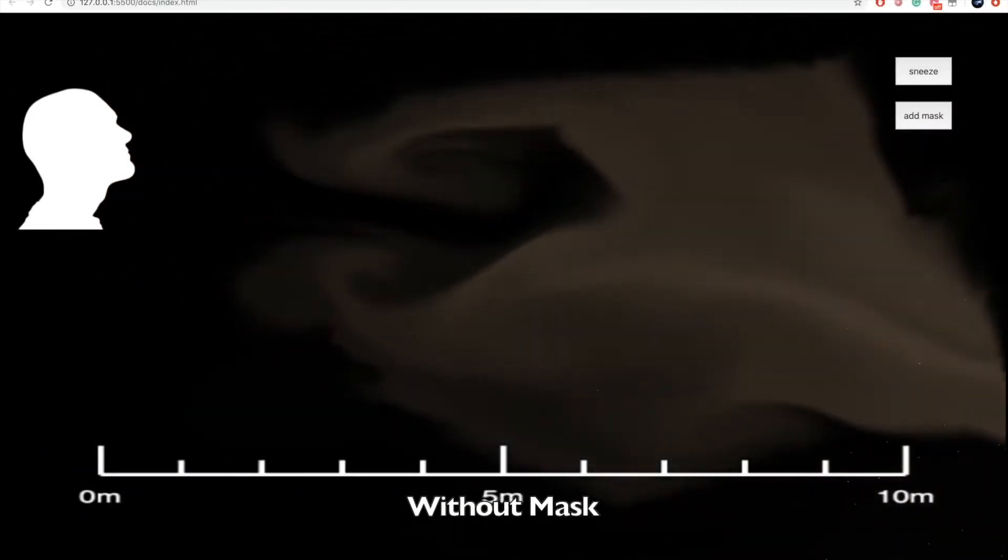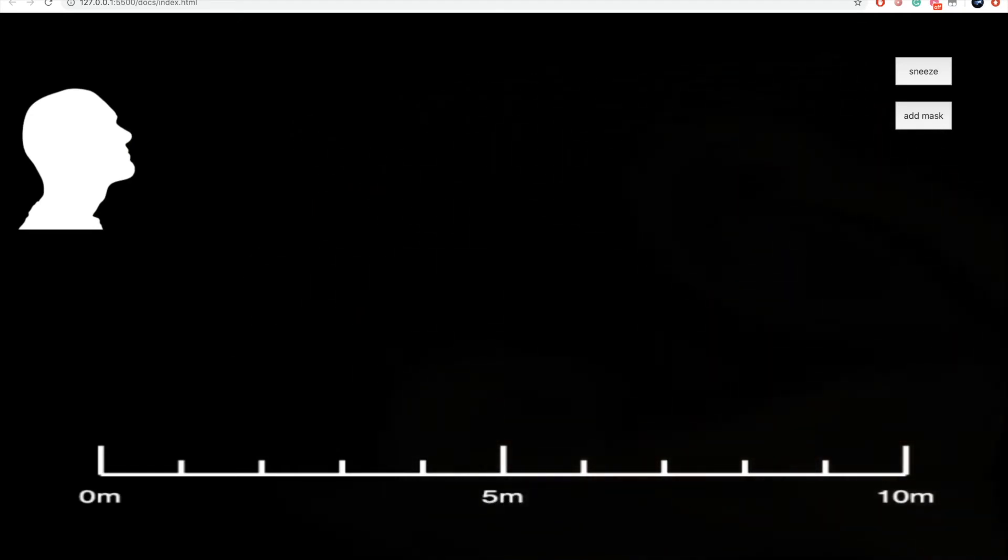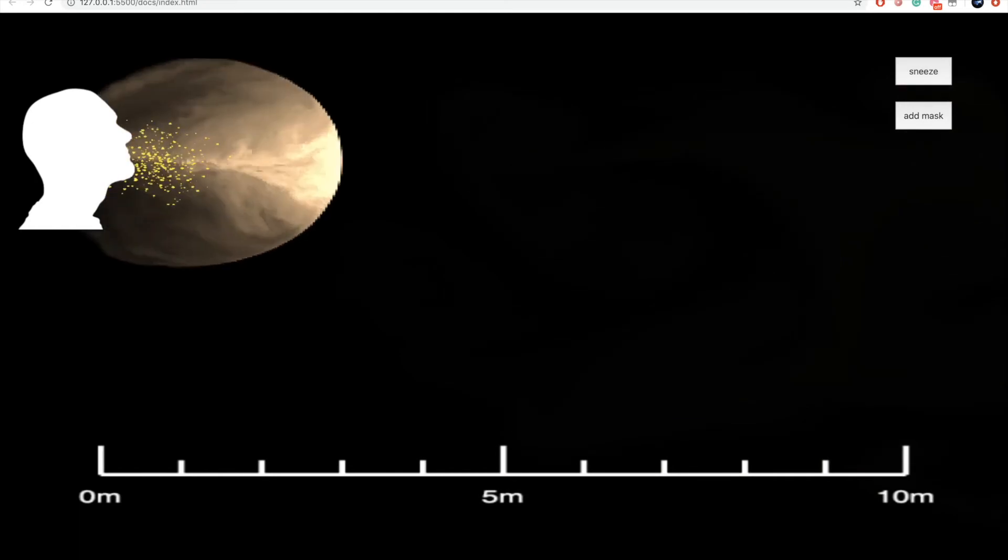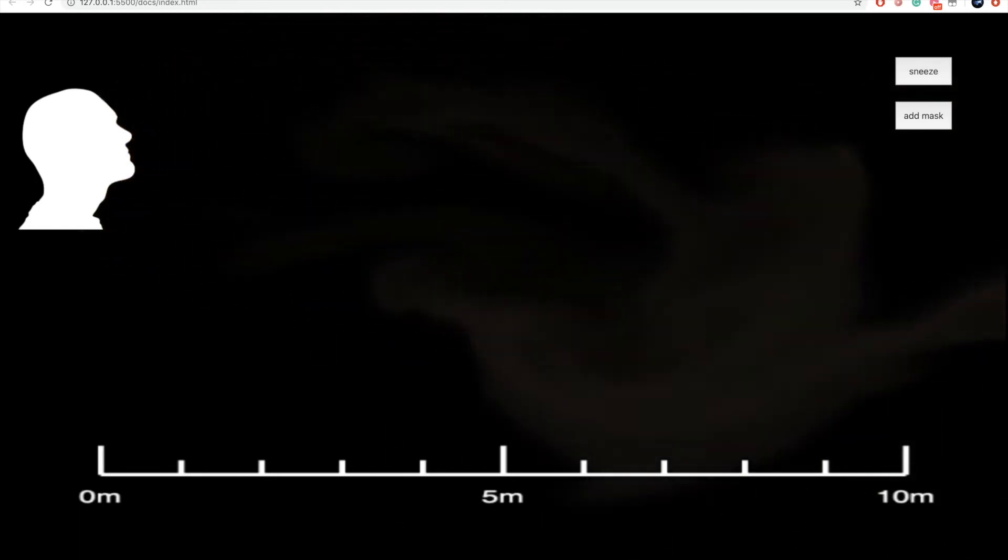Here is the situation where people sneeze without wearing a mask. As we can see, the airborne sneeze spreads pretty fast because sneeze travels at about 100 miles per hour. However, there are also a lot of visible droplets that can fly a long way.